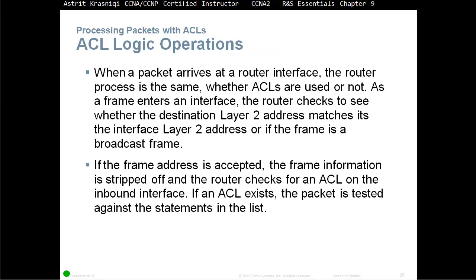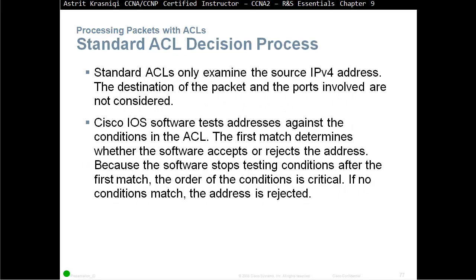ACL logic operation: when a packet arrives at a router interface, the router processes it the same way whether ACLs are used or not. As the frame enters an interface, the router checks whether the destination layer 2 address matches the interface layer 2 address, or if the frame is a broadcast. If accepted, the frame information is stripped off and the router checks for an ACL on the inbound interface. Standard ACLs only examine the source IPv4 address — the destination and port are not considered. The first match determines whether the software accepts or rejects the address, so the order of conditions is critical. If no condition is matched, the address is rejected.